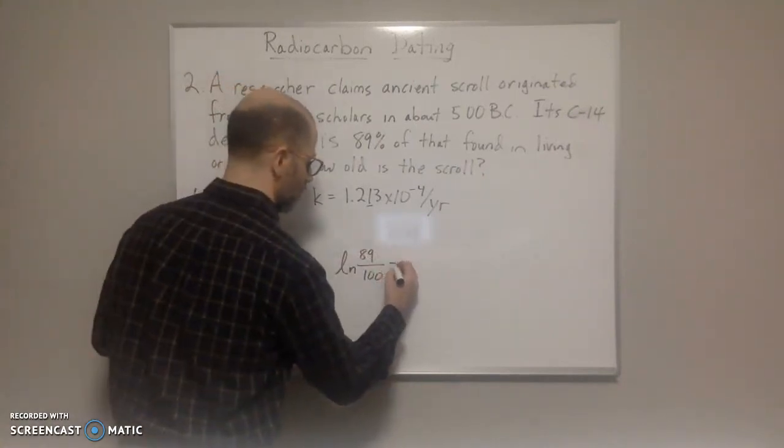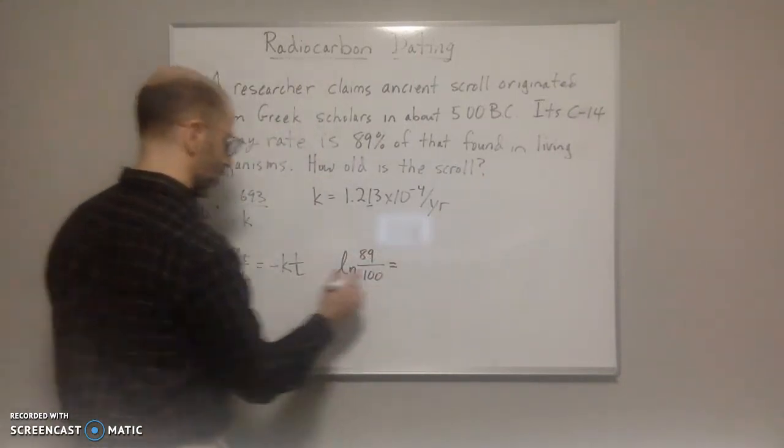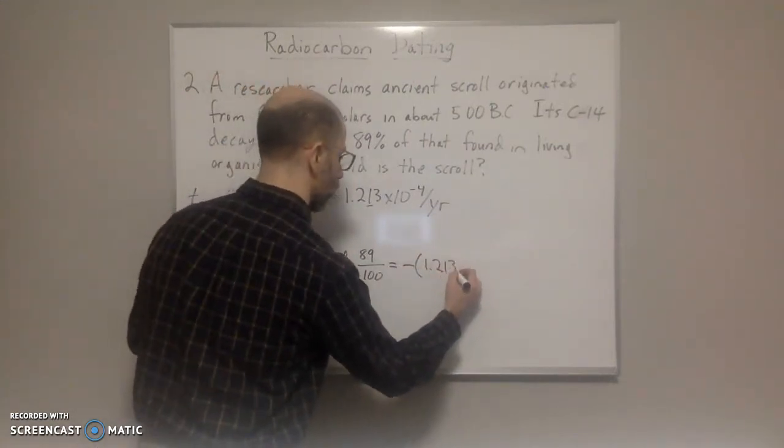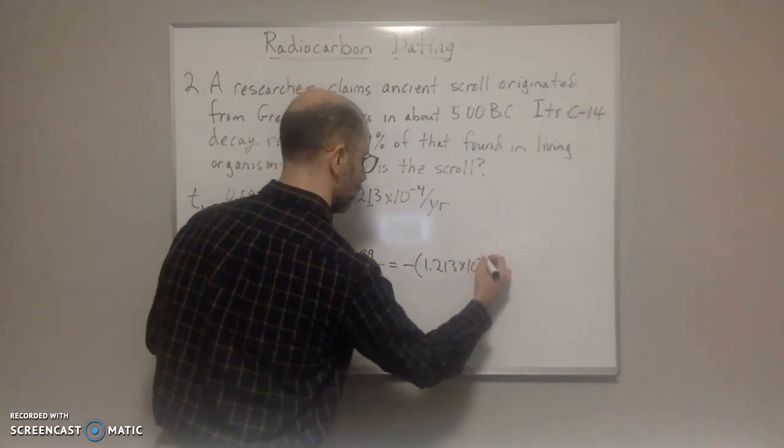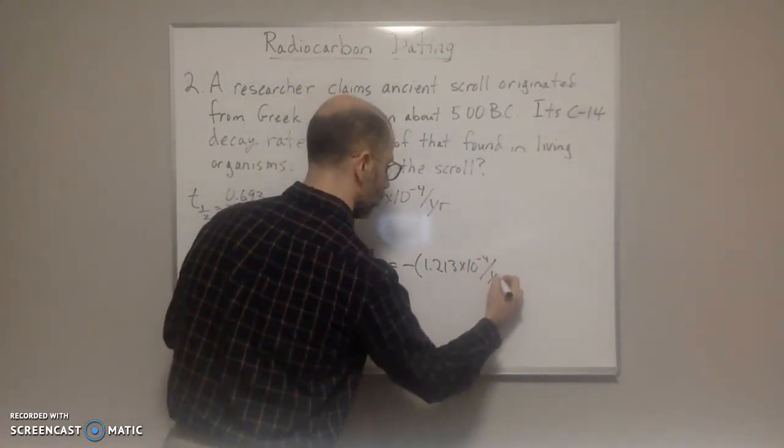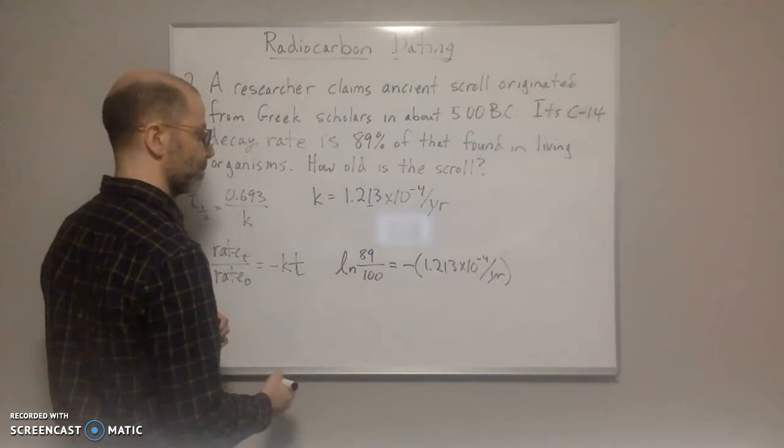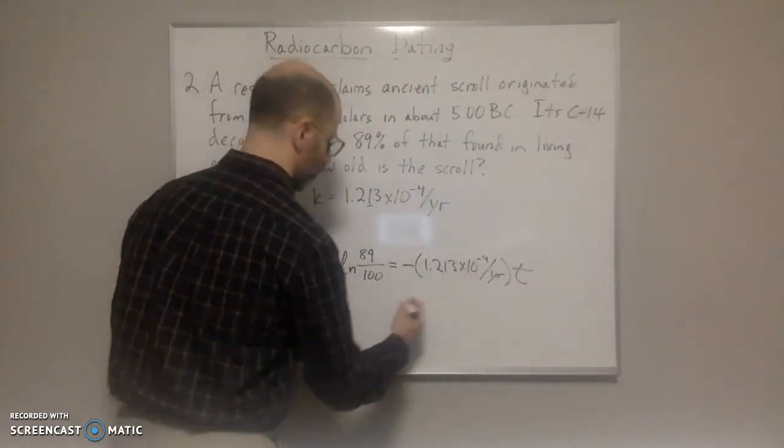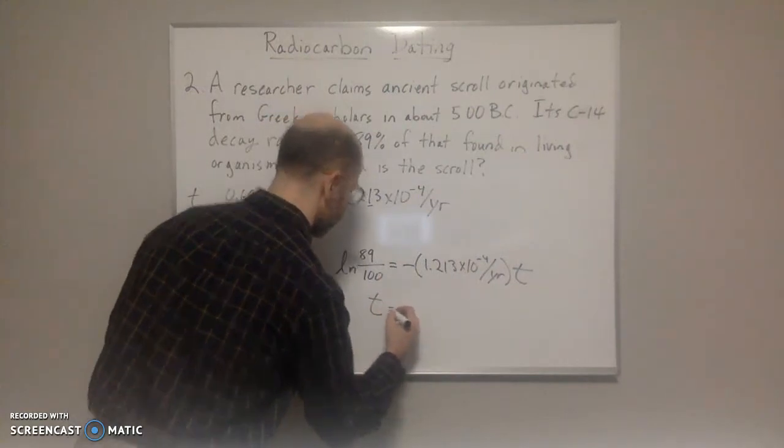So then we set that equal to negative k. K is here, 1.213 times 10 to the negative 4 per year multiplied by t. And now all we need to do is solve for t.